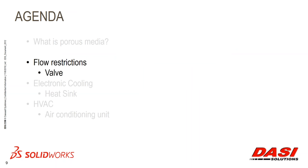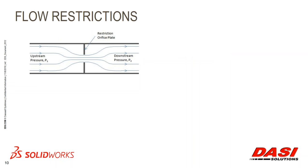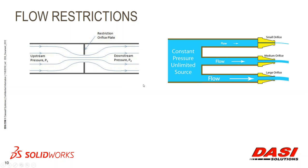The first example I'd like to look at is a valve. With any kind of flow restriction, you'll usually have some sort of pressure drop. In this case I have an orifice plate with higher pressure upstream and lower pressure downstream. If you have a constant pressure source, you'd see a lower flow rate through larger pressure drop regions. Where there's a large restriction there's lower flow, where there's a smaller restriction and larger orifice there's larger flow, so there's a relationship between pressure and flow rate.